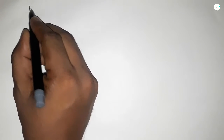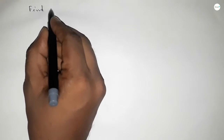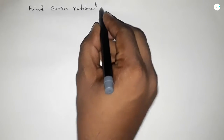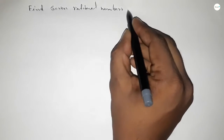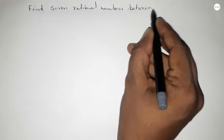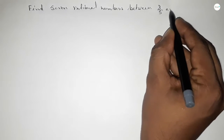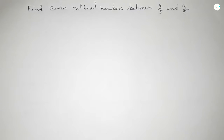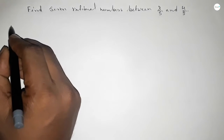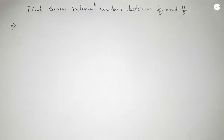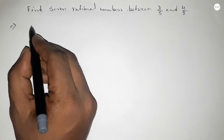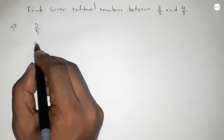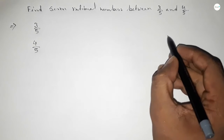Hi everyone, welcome to SSR Classes. Today in this video we have to find seven rational numbers between 3 over 5 and 4 over 5. So let's start the video. First of all, write down the given numbers: 3 over 5 and 4 over 5.